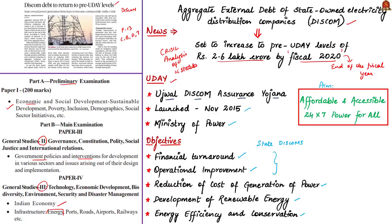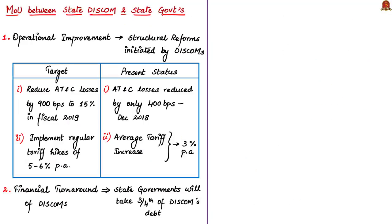Of the five objectives, the first two — operational improvement and financial turnaround — are discussed in this article. Regarding operational improvement, based on the MoU signed between Discoms and respective state governments, structural reforms were to be initiated by Discoms. One target was to reduce aggregate technical and commercial losses, AT&C losses, by 900 basis points from pre-UDAY levels, achieving a 15% reduction by fiscal 2019. But in reality, AT&C losses have reduced by only 400 basis points as of December 2018.